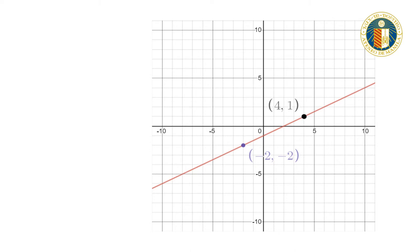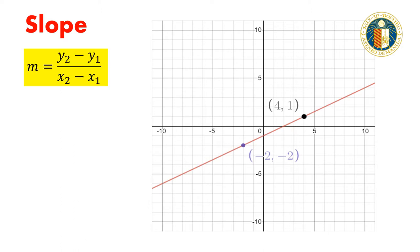If we want to determine the slope of a line, there are two ways of doing this. Recall that the slope is the ratio of the vertical change with respect to the horizontal change, which can also be expressed as the rise over run, or the change in y with respect to the change in x.